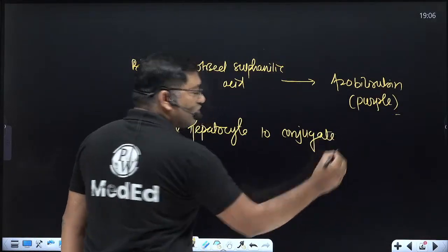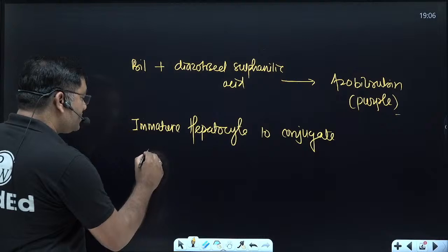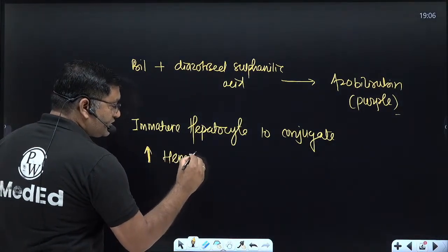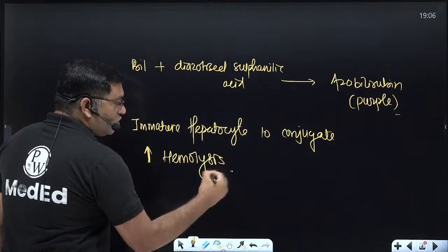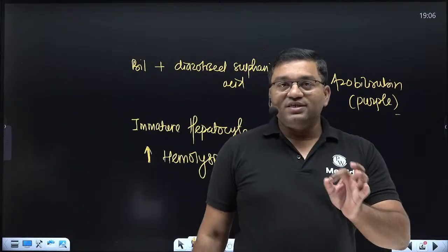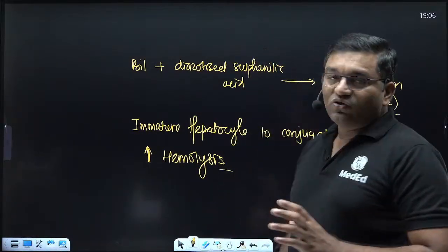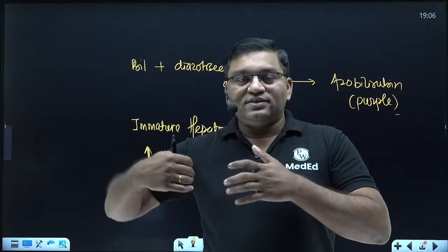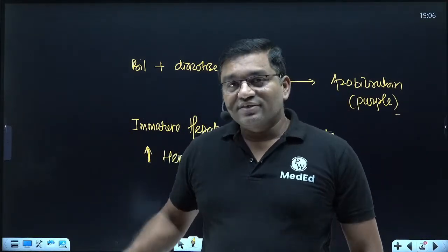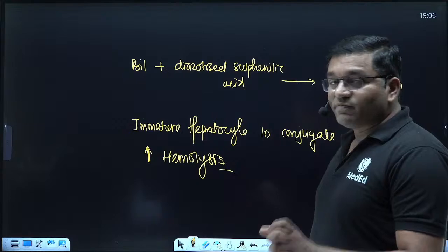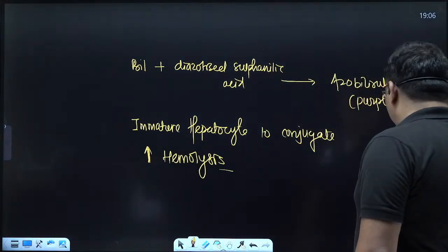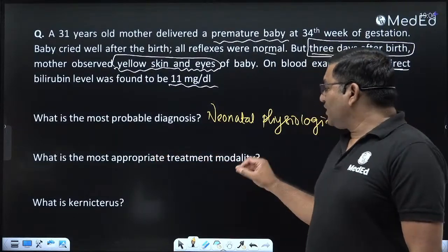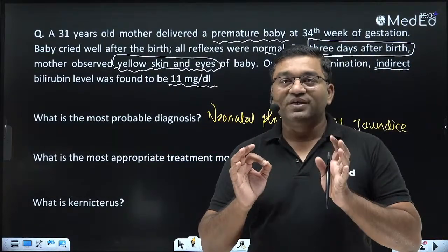Increased hemolysis and an immature hepatic system unable to conjugate bilirubin is the reason for neonatal physiological jaundice. Jaundice appears on the second or third day of life. If it is within 24 hours, it is known as pathological jaundice. Now, the most appropriate treatment modality is phototherapy.